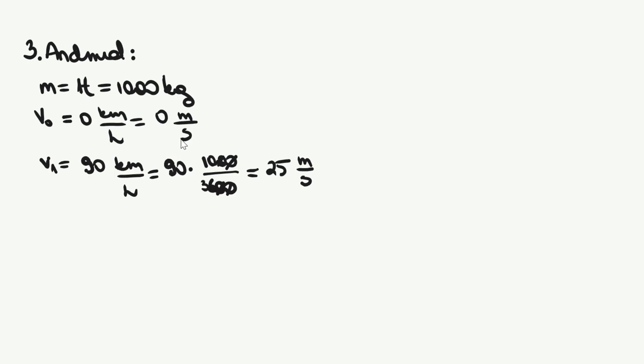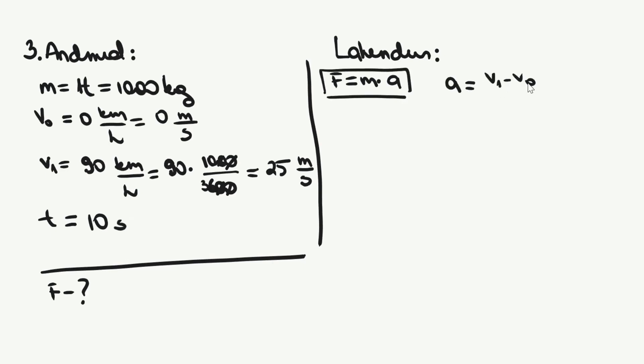Kirjutame välja andmed ning teisendame need SI-süsteemi ühikutesse. Et ühes tonnis on 1000 kilogrammi, korrutame antud tonnid kilogrammideks tuhandega korrutades. Kiirust teisendades korrutame 90 km tunnis tuhandega, sest kilomeetris on 1000 meetrit ja jagame 3600-ga, sest ühes tunnis on 3600 sekundit. Seekord küsitakse jälle jõudu, aga pole antud kiirendust. Seega tuleb see meil endal leida. Kasutame mehaanikas õpitud valemit A võrdub V-V0 jagatud T-ga, kusjuures V on lõppkiirus ning V0 algkiirus. Kiirendus on kiiruse muutumine ajas. Asendame andmed valemisse ning arvutame kiirenduse. Saame kiirenduseks 2,5 meetrit sekund ruudus.